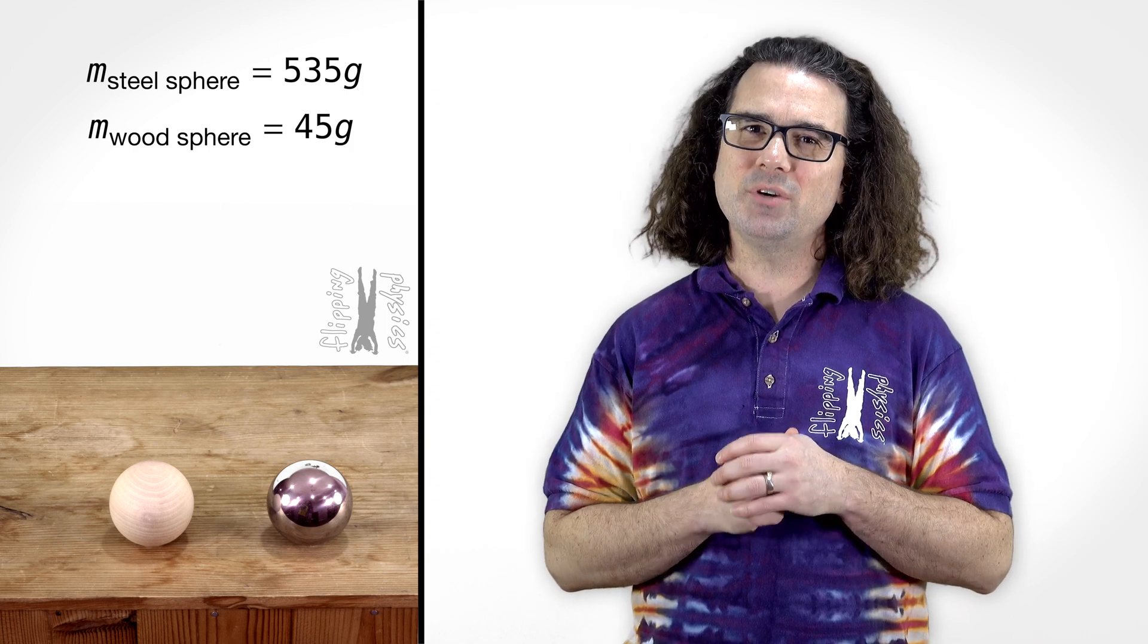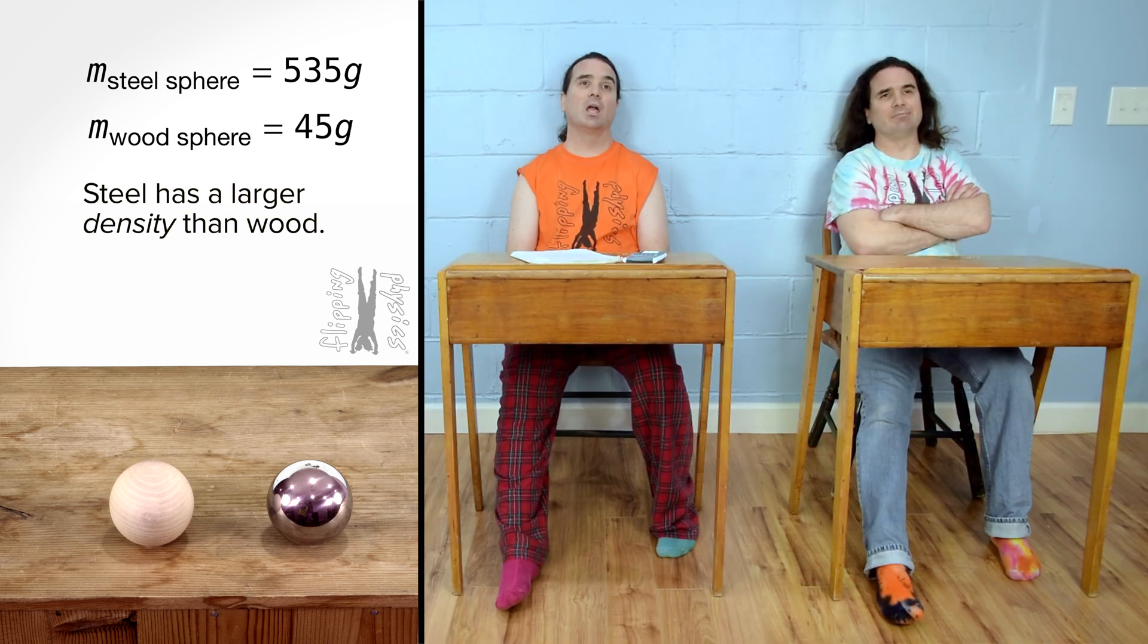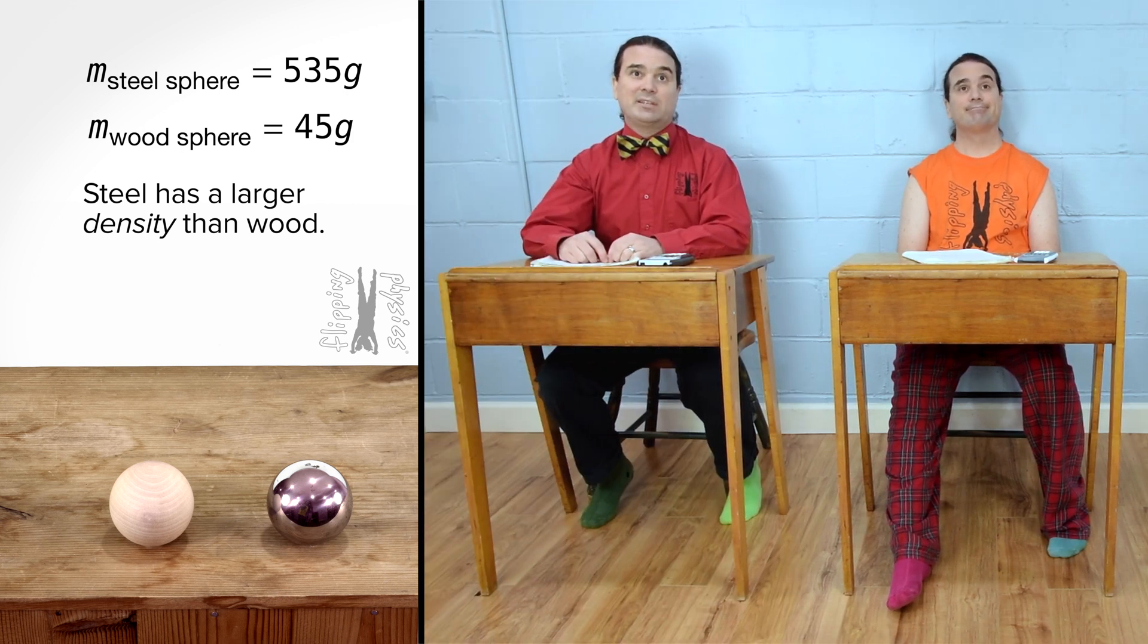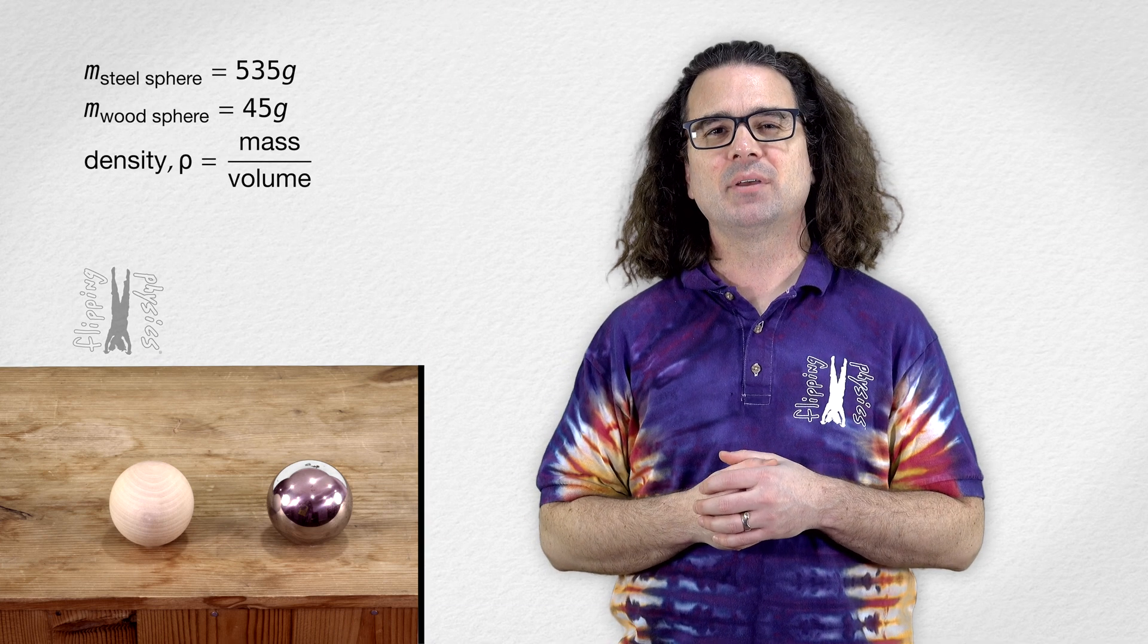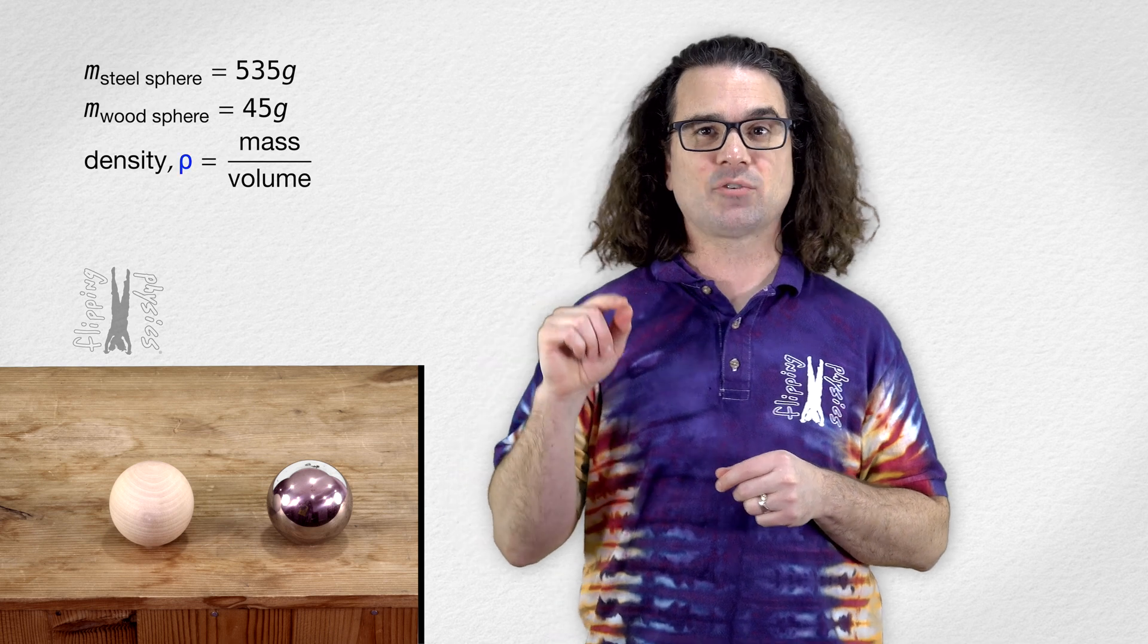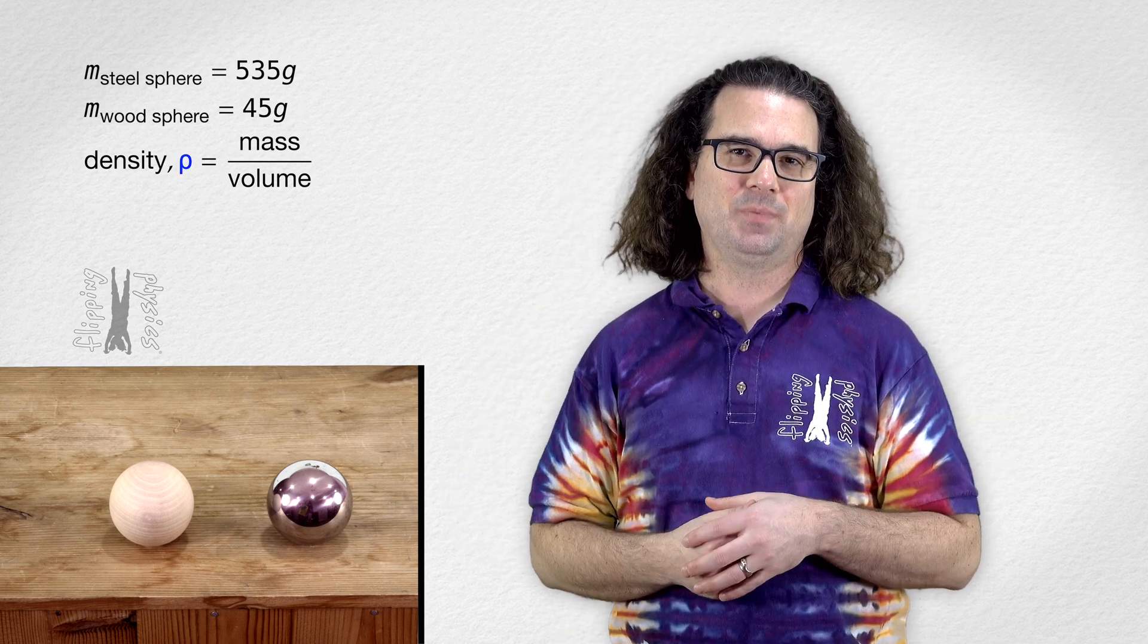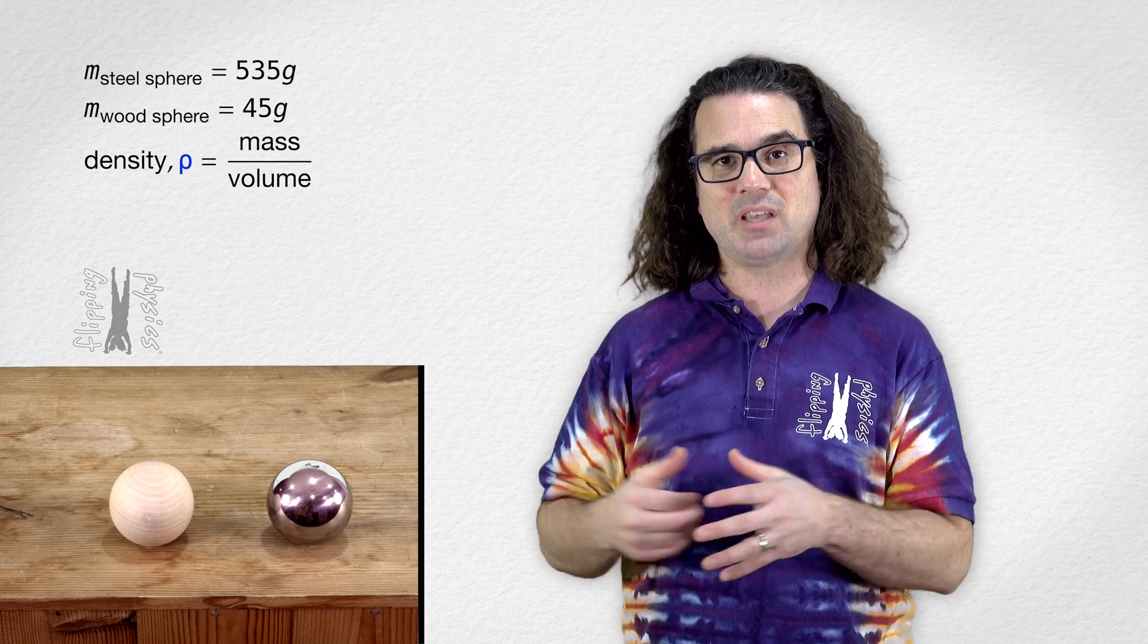However, we do know that steel has a larger density than wood. Oh, yeah. I tend to confuse density and mass. And mass and weight. Yeah. Which is why we did that whole lesson on the differences between weight and mass. Yep. Density equals mass divided by volume. The symbol for density is the lowercase Greek letter rho, and it looks like a curly lowercase p.